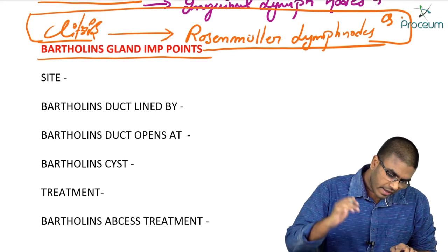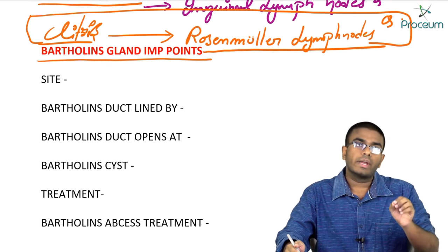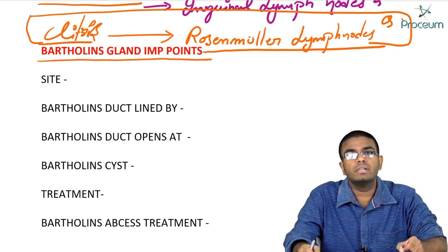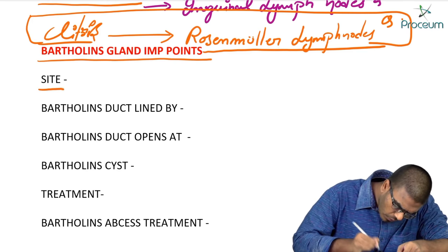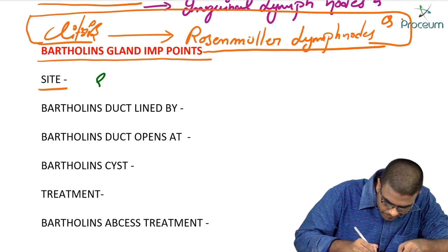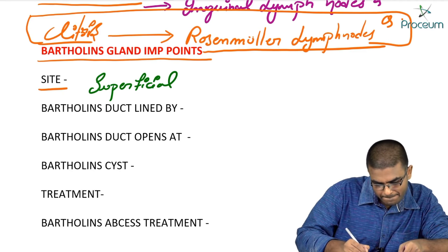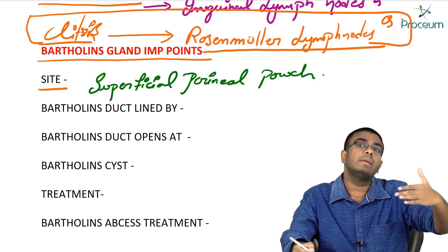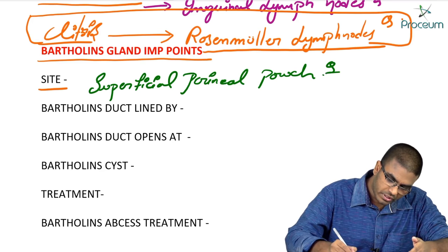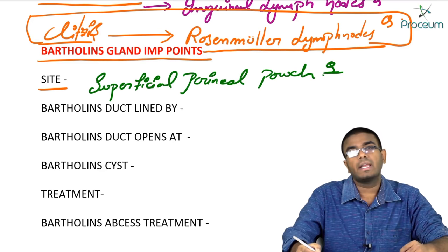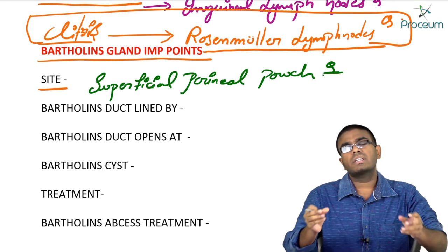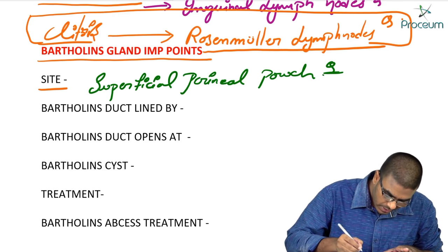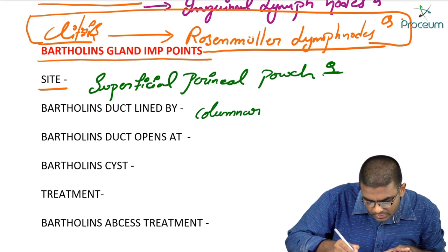Bartholin's gland produces alkaline mucus during sexual intercourse. The site of Bartholin's gland is in the superficial perineal pouch. The Bartholin's ducts are lined by columnar epithelium — a very important MCQ. These ducts open into the vestibule.